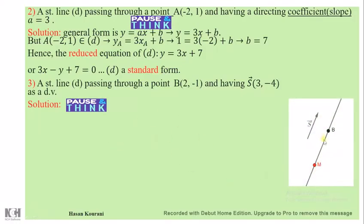Here we have, as you see, a straight line passing through B and having a direction vector S. The idea is based on placing M of coordinates (x, y) on the straight line.